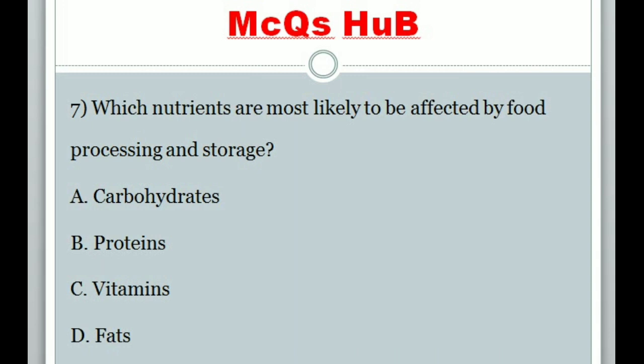Question 7: Which nutrients are most likely to be affected by food processing and storage? Answer C: Vitamins.